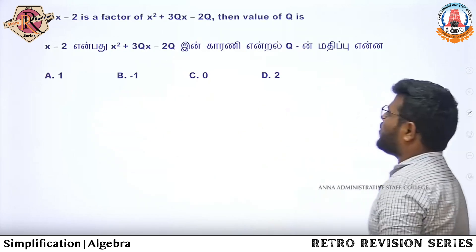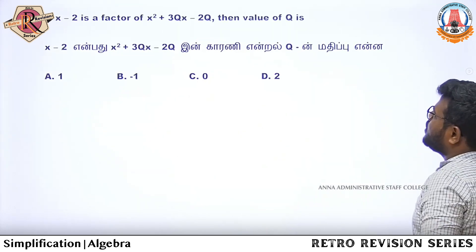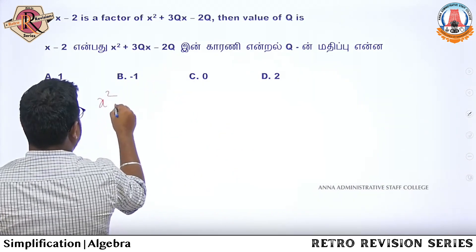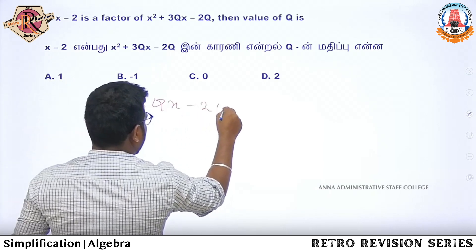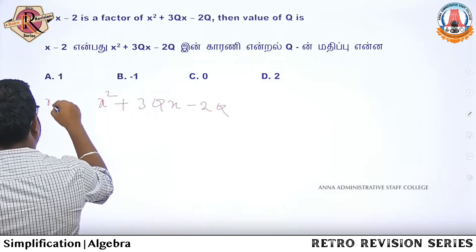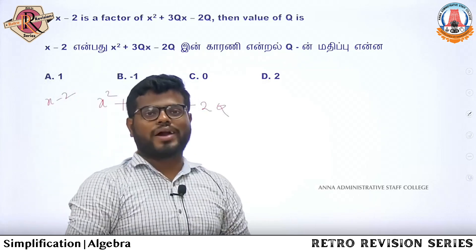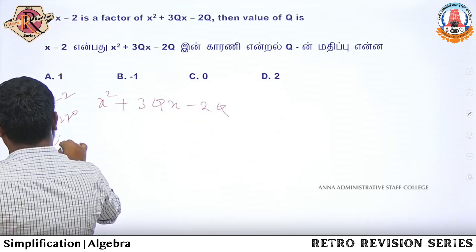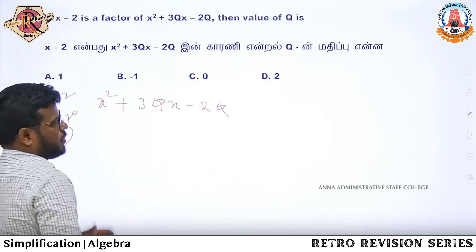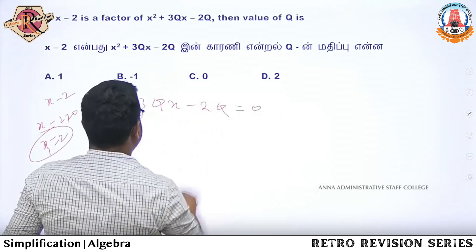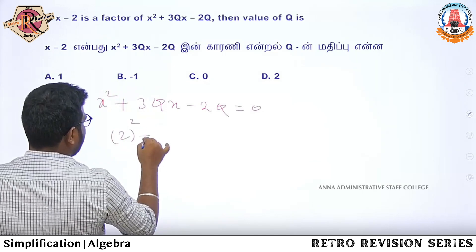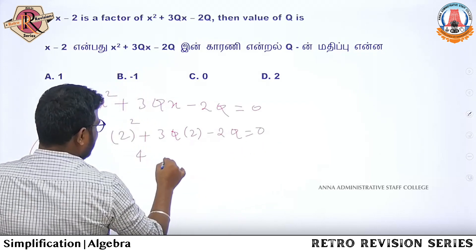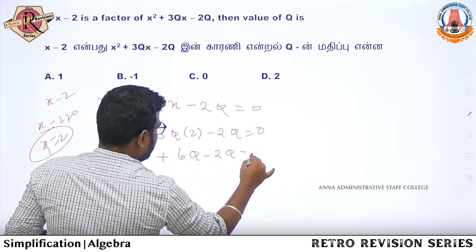Question number 5: If x minus 2 is a factor of x squared plus 3qx minus 2q, find the value of q. So one quadratic equation is there: x squared plus 3qx minus 2q. Since x minus 2 is a factor, x minus 2 equals 0, so x equals 2. Now substitute x equals 2: 2 squared plus 3q times 2 minus 2q equals 0, giving 4 plus 6q minus 2q equals 0.